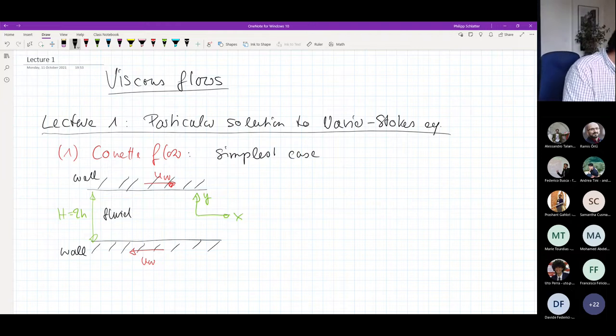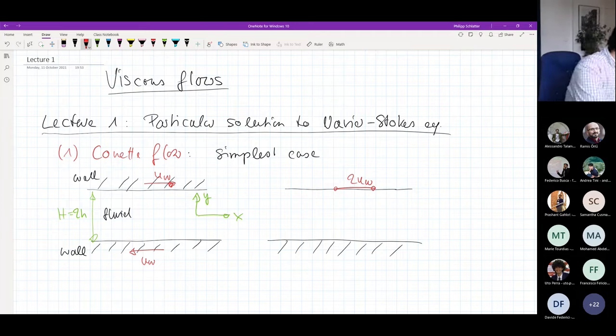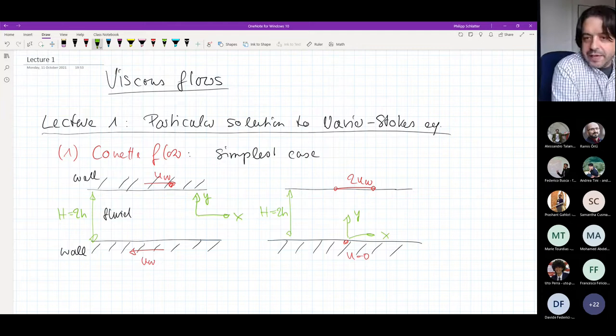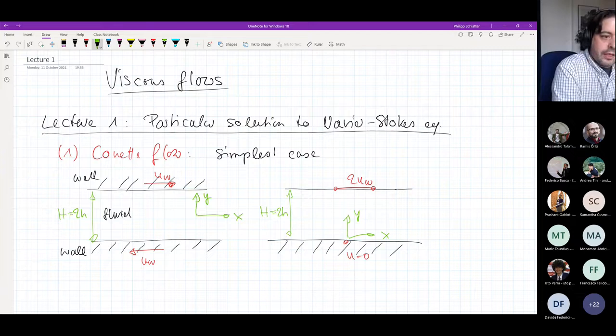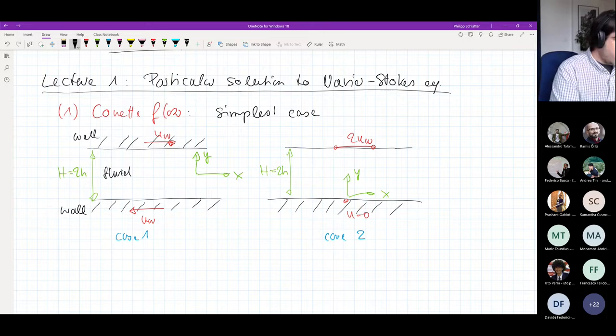This is actually Couette flow. Before we start to calculate it, I would like to mention that there is a similar description of the same flow case, where we can assume that we have one wall which is at rest, and the other wall moving with a speed of two Uw. With a height of H being two h, and on the bottom U being zero. This would correspond to exactly the same case as we will discuss later on. This one here is Couette flow case one, and this will be case two.